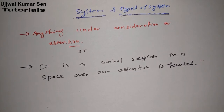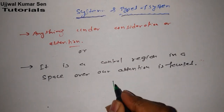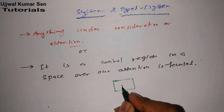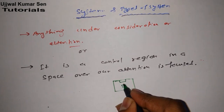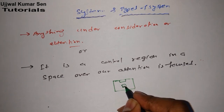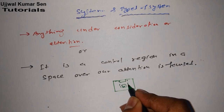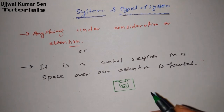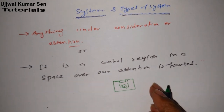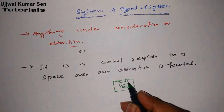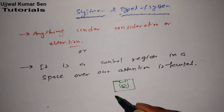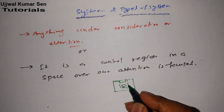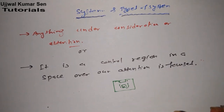Suppose you are sitting in a classroom and a teacher is teaching there. Your system includes you, your teacher, and the board where he is teaching — if your attention is totally focused on the classroom and your study. If your attention is focused only on the board, then the system is between the board and you only. The other students sitting around you are just the surrounding. What separates system from surrounding is called boundary.